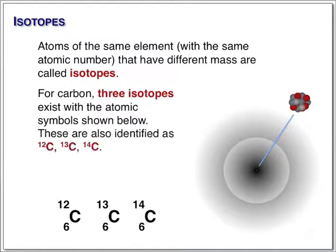Carbon exists in nature as a mixture of carbon-12, 13, and 14. These are referred to as isotopes. They're all carbon, they just have different masses.